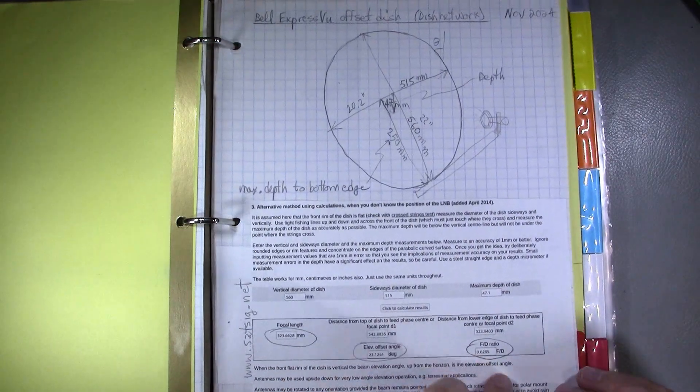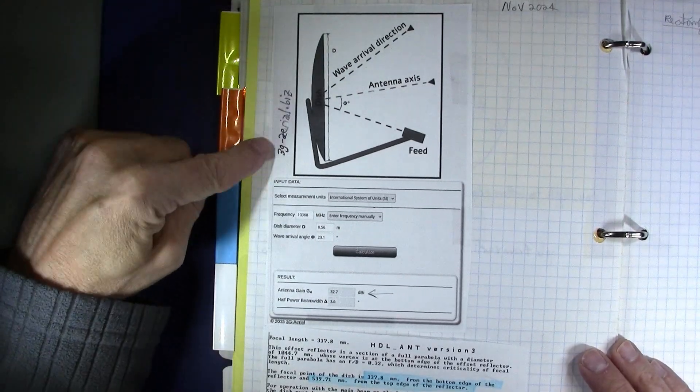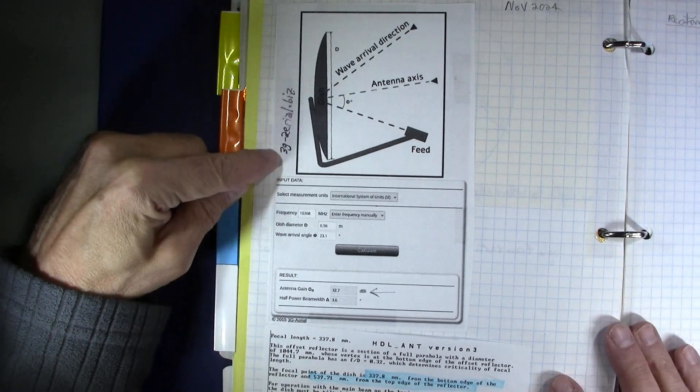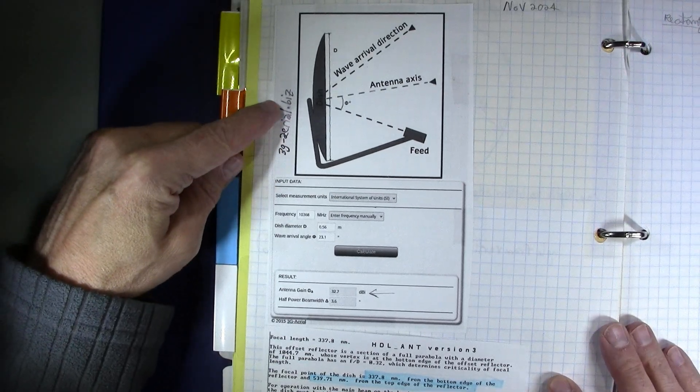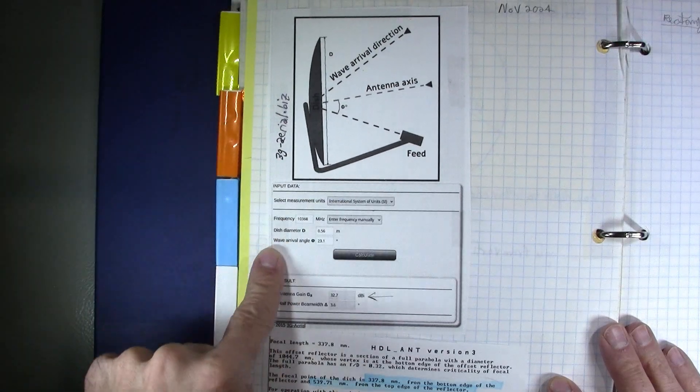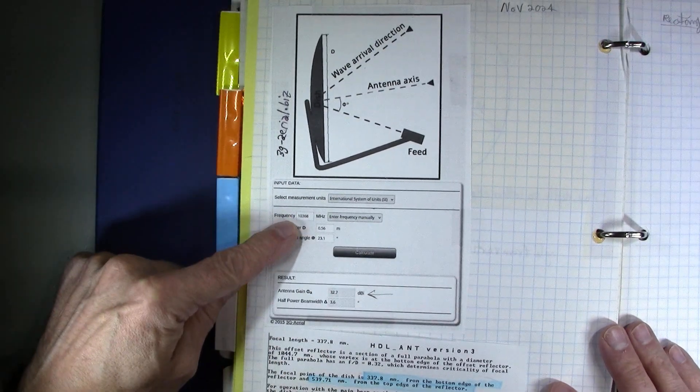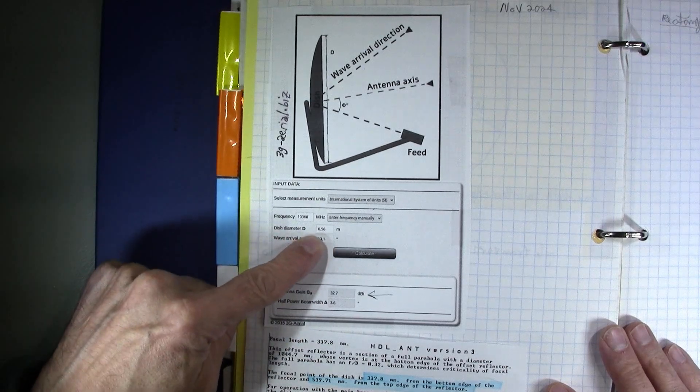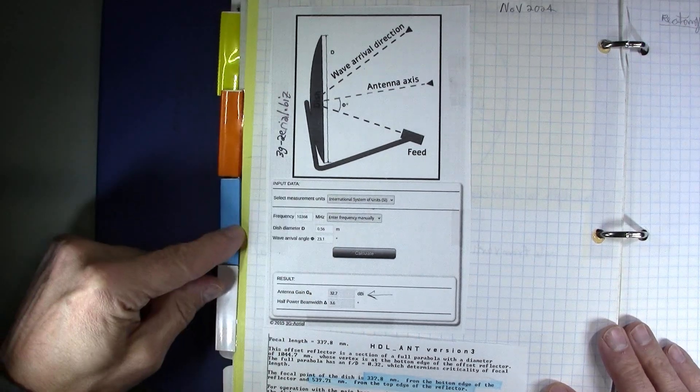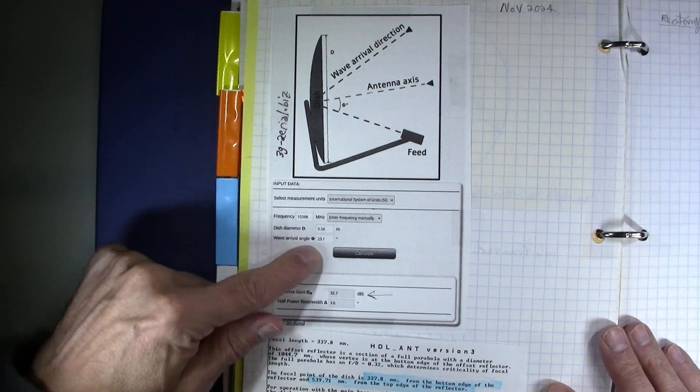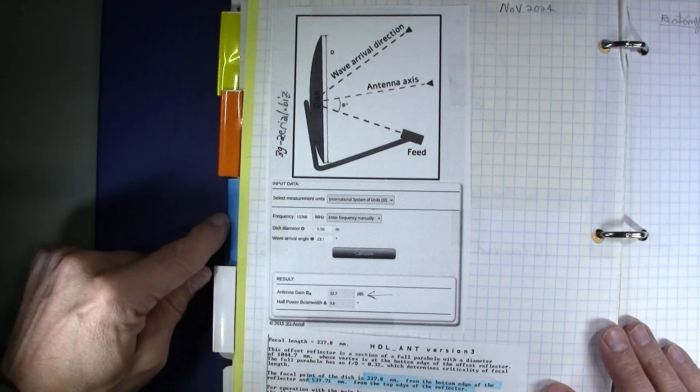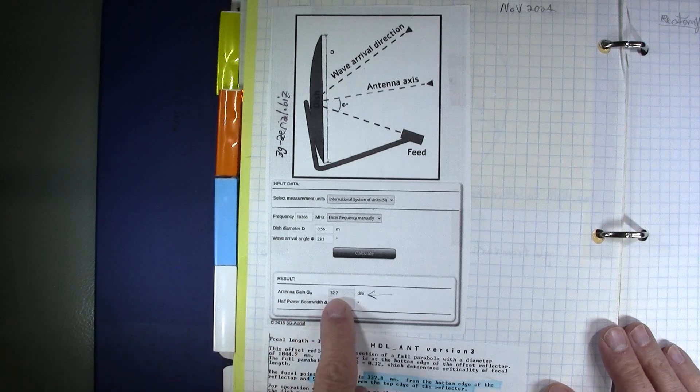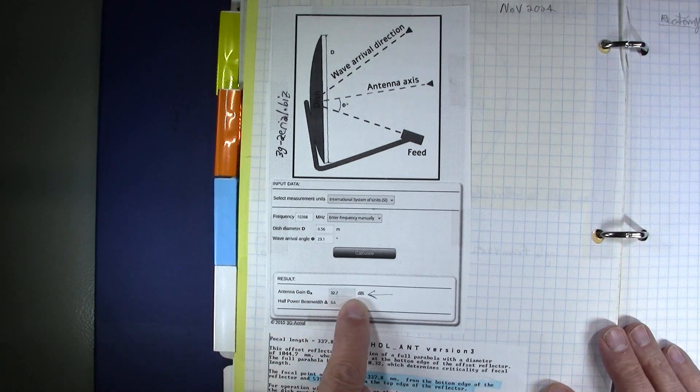Now once we have these we can also calculate the gain. And this time I used the website 3g-aerial.biz and we just input the data such as the frequency. We're going to use it at 10.368, the diameter of the dish, so 0.56 meters, the arrival angle 23.1 and we calculate.